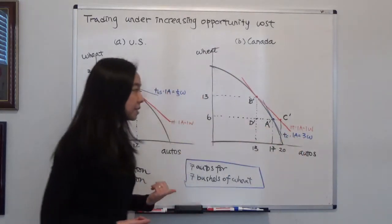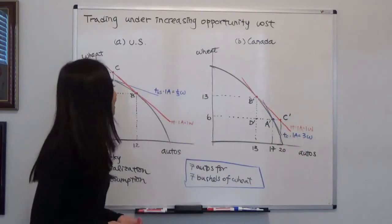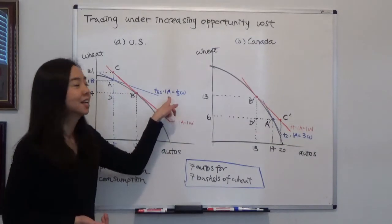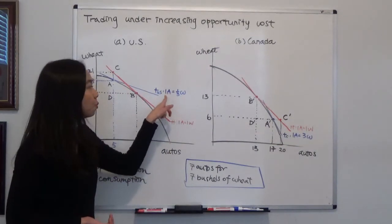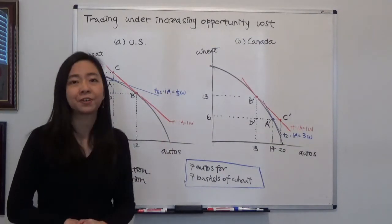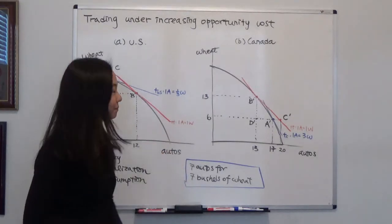So you can see that the opportunity cost of an automobile is lower in the United States. Therefore, the US has a comparative advantage in the production of automobiles.